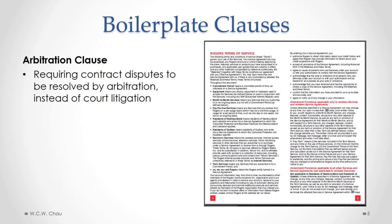Another common boilerplate clause is an arbitration clause. An arbitration clause requires disputes under the contract to be resolved by arbitration instead of court litigation. So instead of suing in court, the parties have to resolve their dispute by arbitration, which quite often could be cheaper or faster.